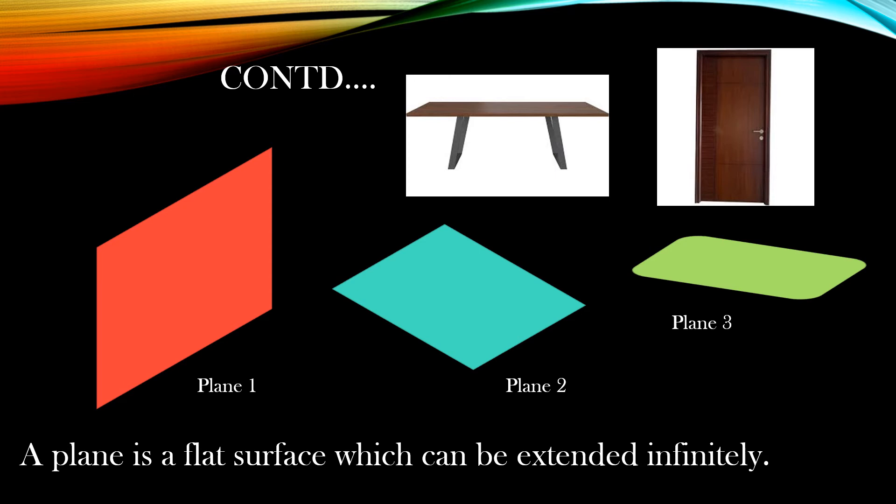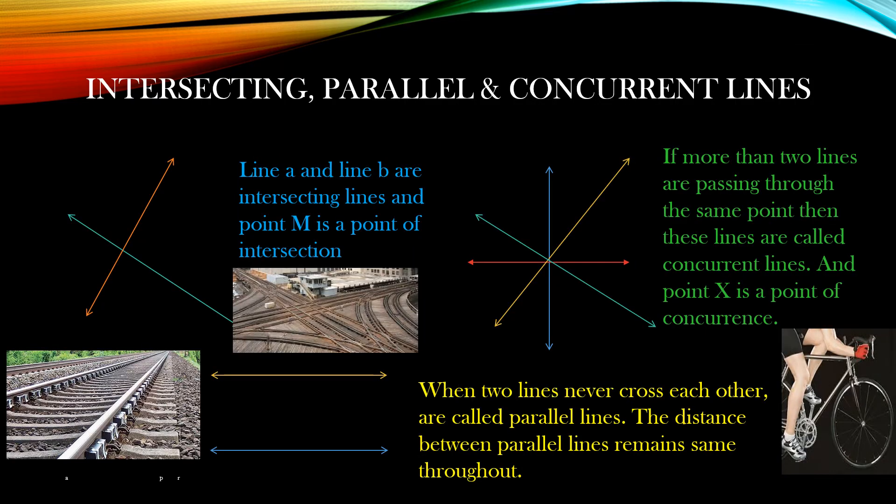A tabletop and door are limited-area plane surfaces, but they can also be considered as a plane. Now, a very interesting thing — we can see a few lines here. In our first slide we learned about a particular line, how to name it and how to write it. Here we will see what happens when two or three lines come together.